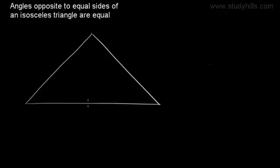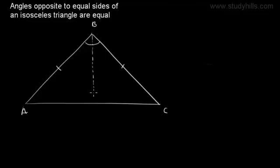Here we have triangle ABC and side AB is equal to side BC. Now we will draw the bisector of angle B and find a point D on side AC. Here we are bisecting this angle, and D is the point on side AC. Now we have two triangles: triangle ABD and triangle CBD.